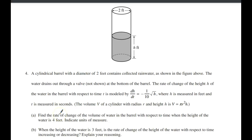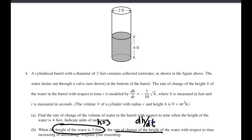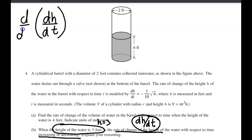Let's go ahead and look at part B. For part B, they're telling us that the height of the water is 3 feet — H equals 3. They want to know: is the rate of change of the height, dH/dt, increasing or decreasing? If you want to know if this value is increasing or decreasing, that means we want to know if its derivative is positive or negative. So I want to take dH/dt and find the derivative of that with respect to time. If I end up with a positive answer, dH/dt is increasing; if negative, it's decreasing.